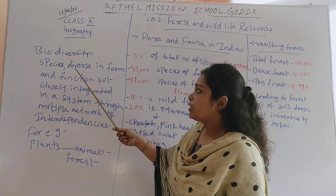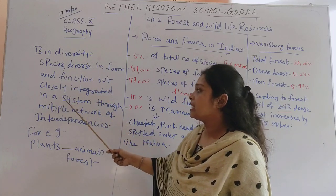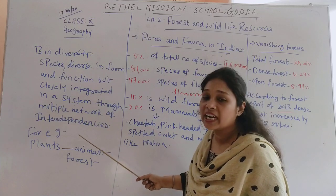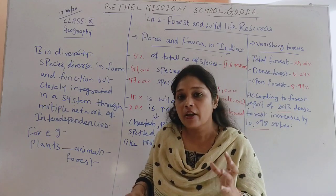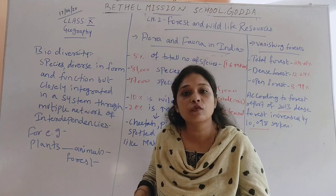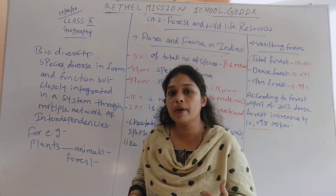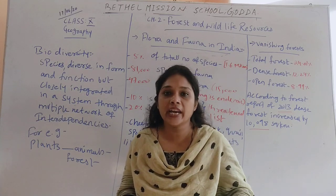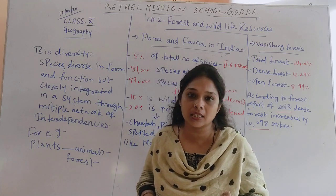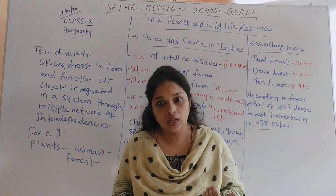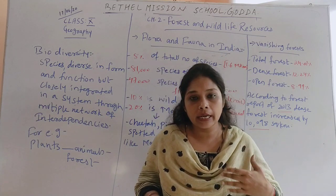Biodiversity means: species diverse in form and functions, but closely integrated in a system through a multiple network of interdependency. In biodiversity, we have different kinds of species with different features and functions according to the environment and their nature, but they are interconnected, interrelated, and interdependent with each other, forming the ecological system of the world.